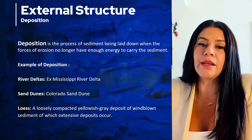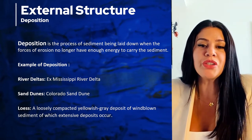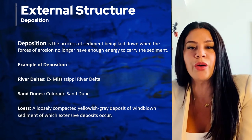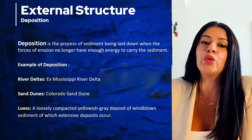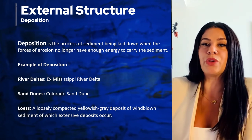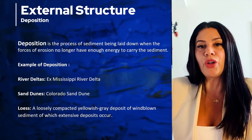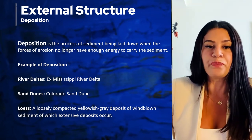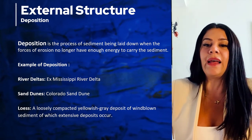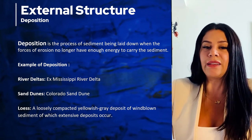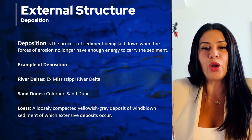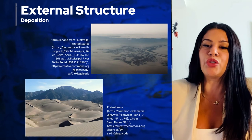Deposition occurs whenever the force eroding the sediment no longer has the energy to continue carrying it. A great example of deposition is the creation of river deltas — when a river slows down it loses energy and deposits sediment, creating a delta. Another example of wind deposition is the creation of sand dunes.